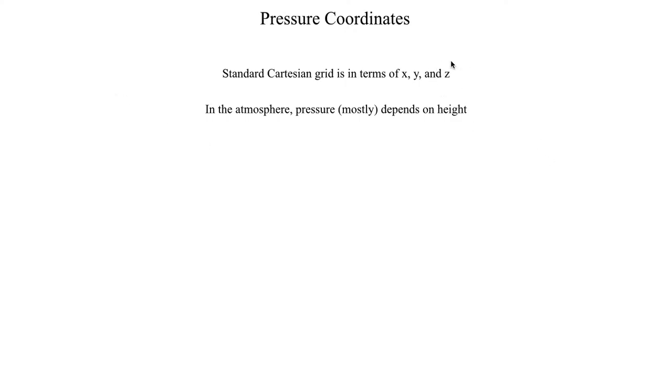So what we can do to create a different coordinate system, which can actually be very useful, is we can devise a coordinate system that depends on pressure and replace our z coordinate with the variable of pressure.